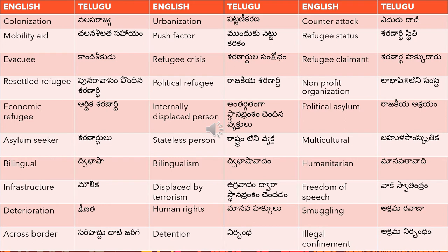Colonization means 'valasa rajyam'. Urbanization — when people move from the countryside to the city — means 'pattana karana'. Counter attack means 'edurudadi'. Mobility aid — the aid for moving from one place to another — means 'chalana seelata sahayam'. Push factor means 'mundhuku netto karanam'. Refugee status means 'saranarthi sthiti'. Evacuee means 'kanda seekudu'. Refugee crisis means 'saranarthula sankshobham'.